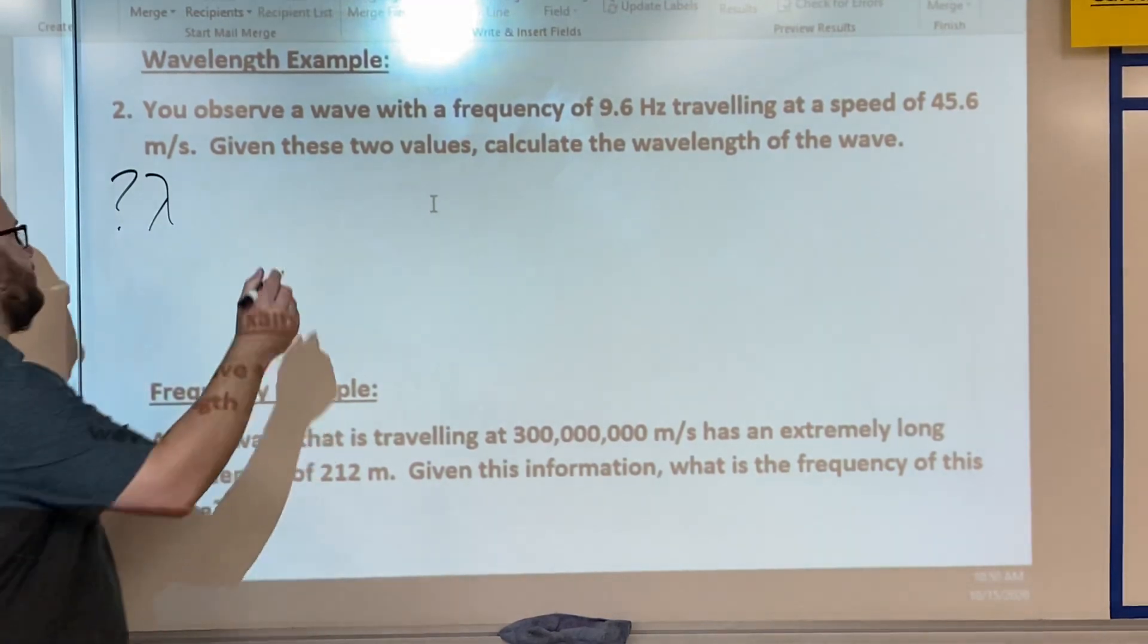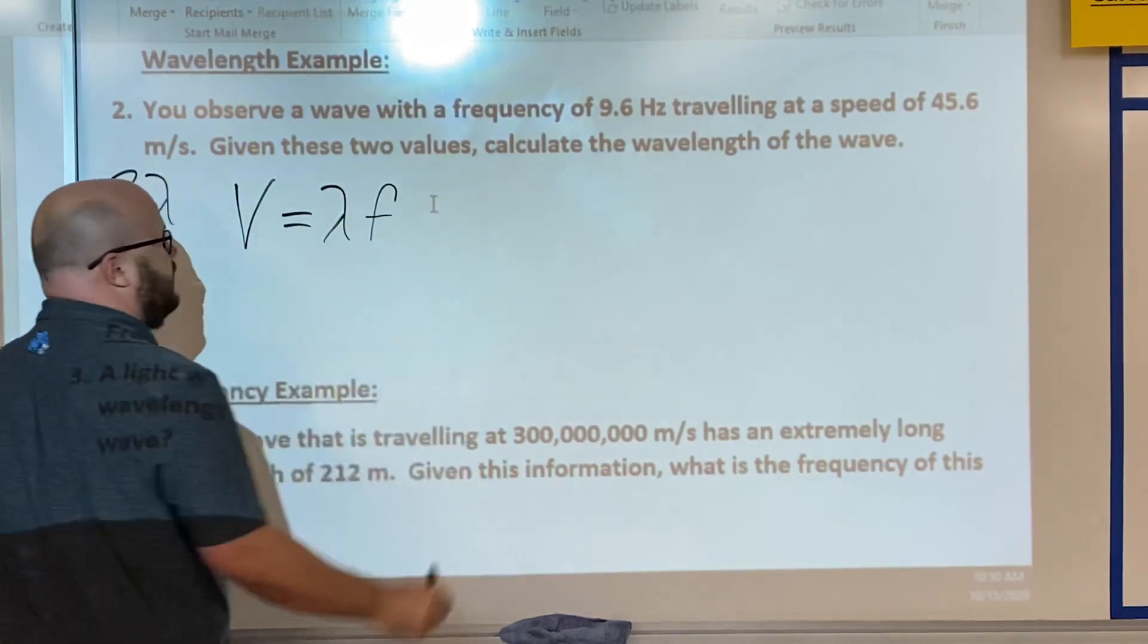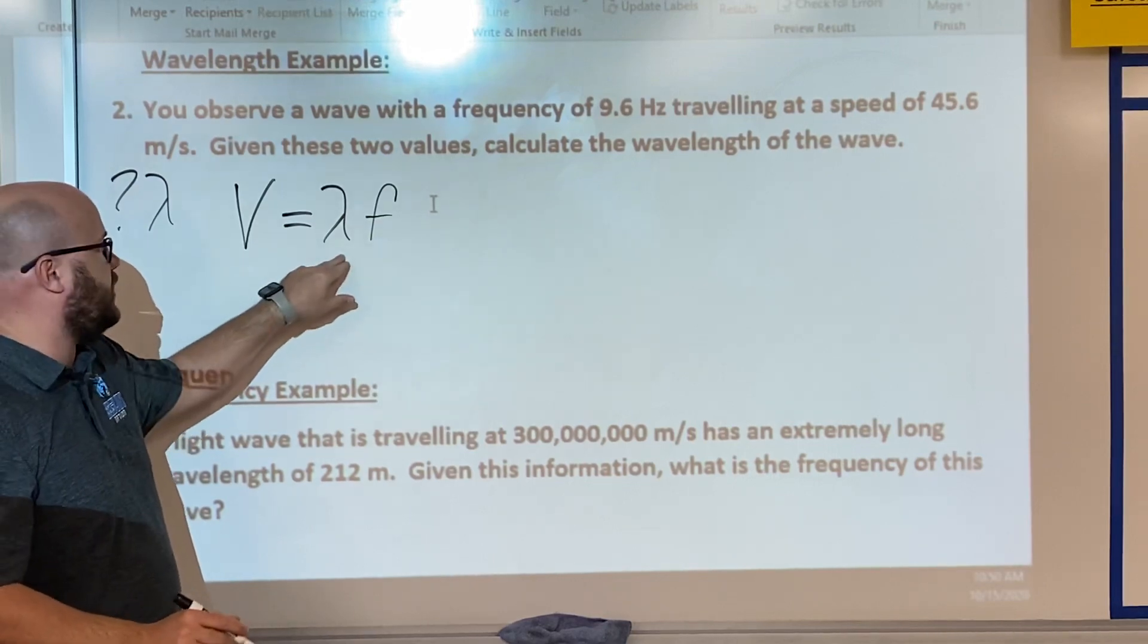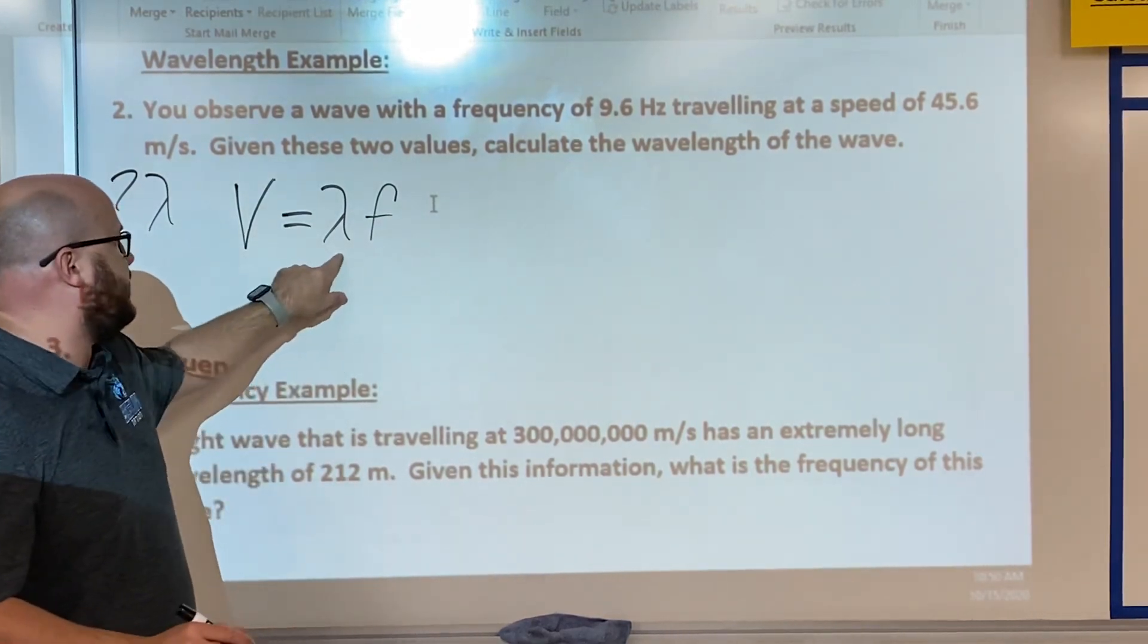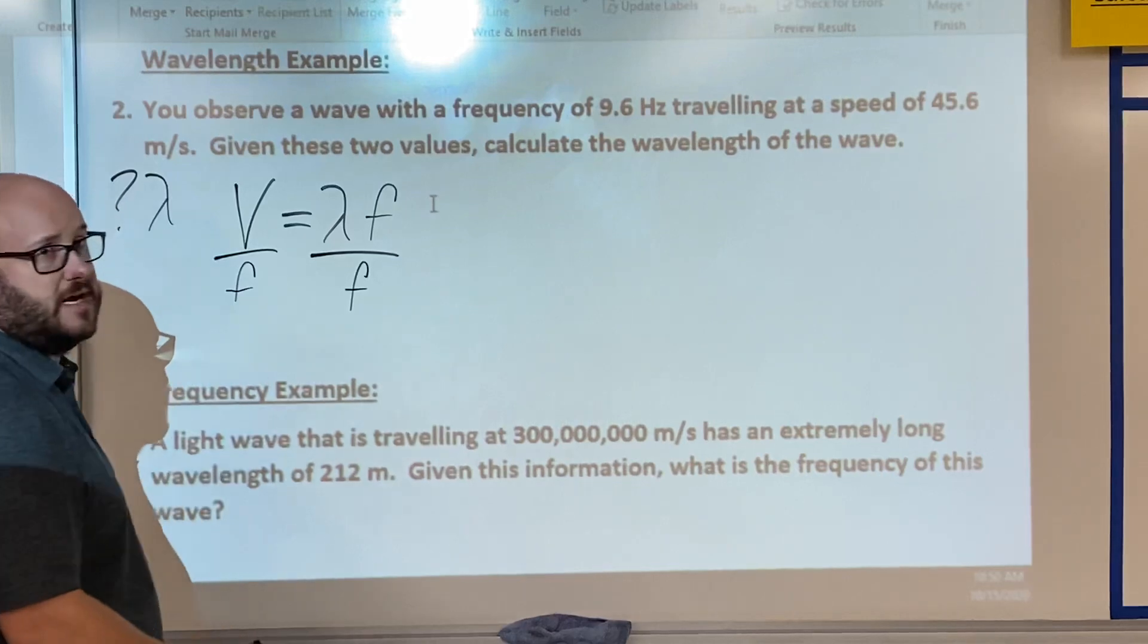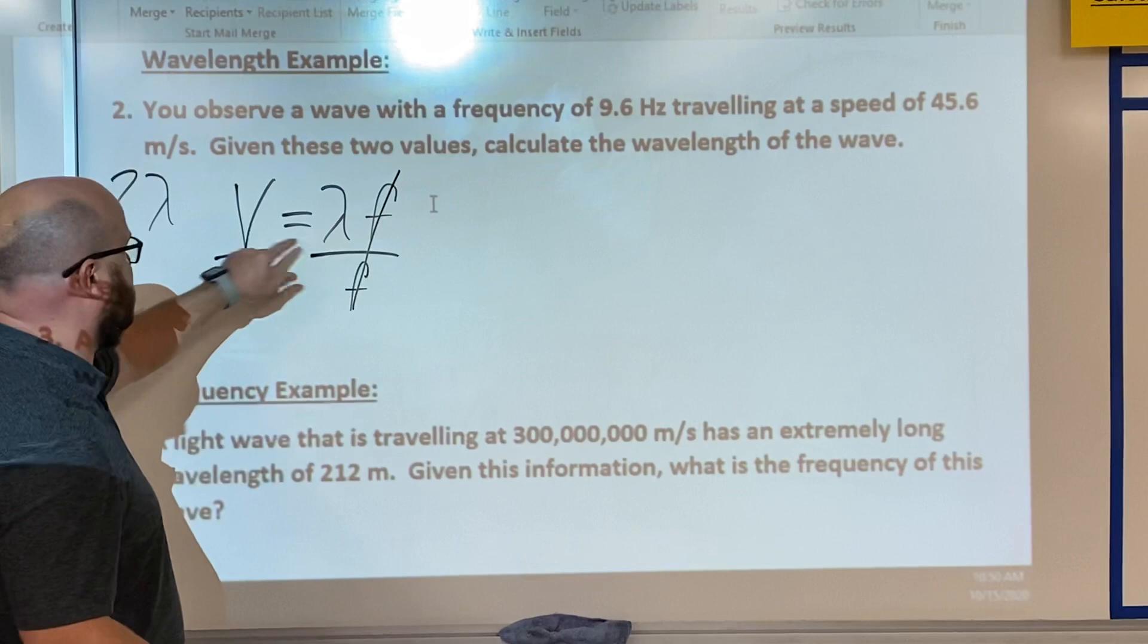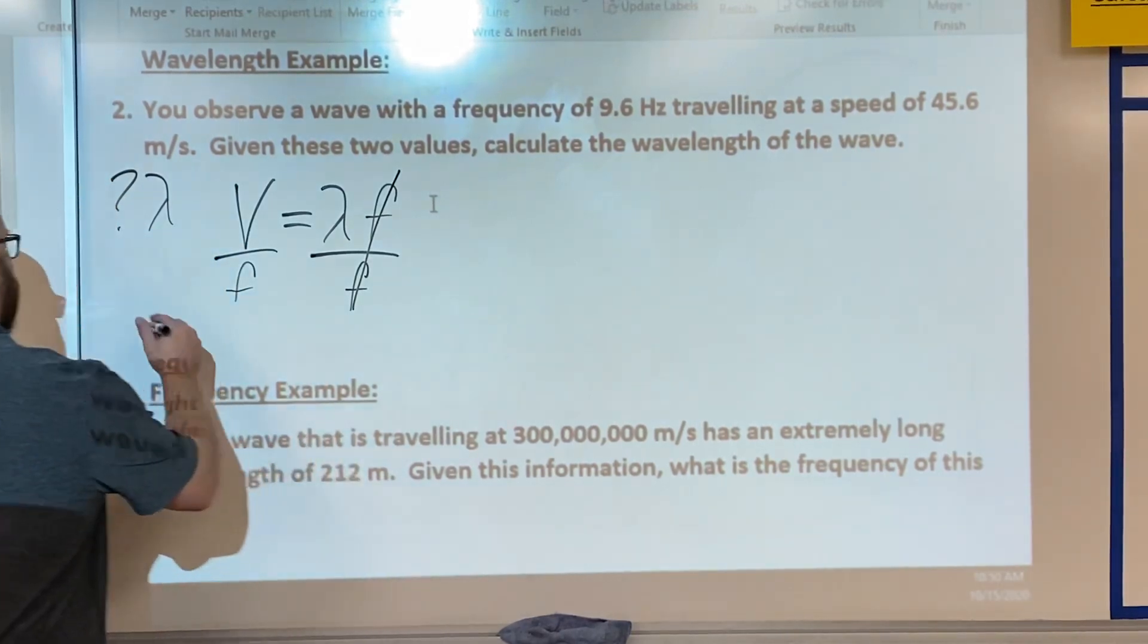Write down our formula V equals lambda frequency. But that's solving for velocity or speed. Let's solve for lambda. To do that we need to isolate this variable, and to isolate it we divide by F on both sides. So F cancels out over here, so lambda equals velocity divided by frequency.